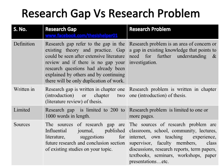Research gap is written in chapter 1 introduction or chapter 2 literature review of a thesis, while research problem is written in chapter 1 introduction of the thesis. Research gap is limited to 200 to 1,000 words in length, while research problem is limited to one or more pages.